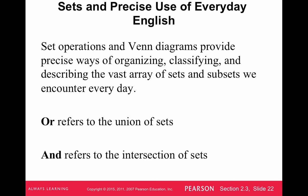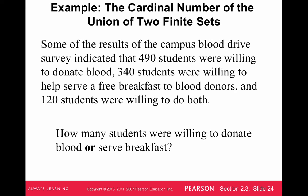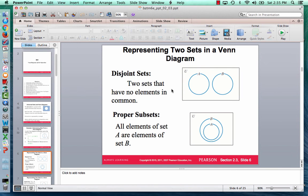Sometimes we use common language that corresponds to set notation. Whenever we say OR, that refers to the union of sets — for example, a nursing program requiring physics or chemistry includes students who take physics, chemistry, or both. AND refers to the intersection of sets — requiring physics and chemistry means students must have taken both. That's a lot of set notation and set operation material. Good luck, and we'll see you next time.